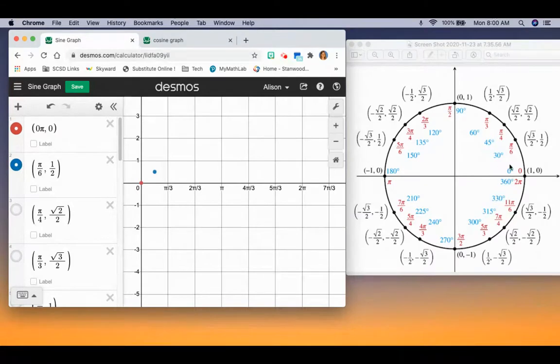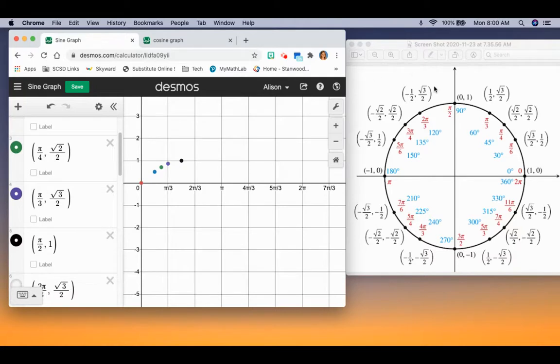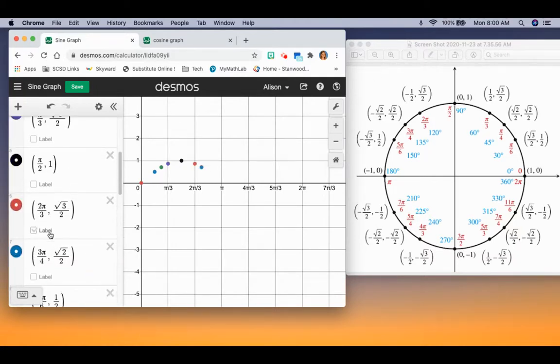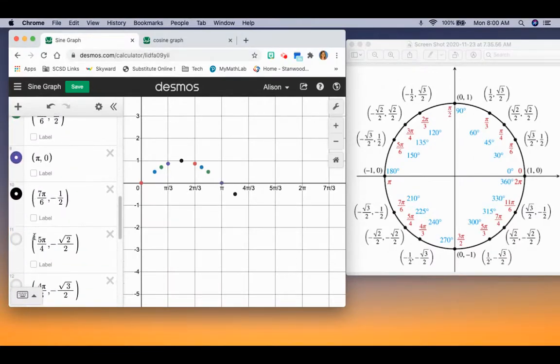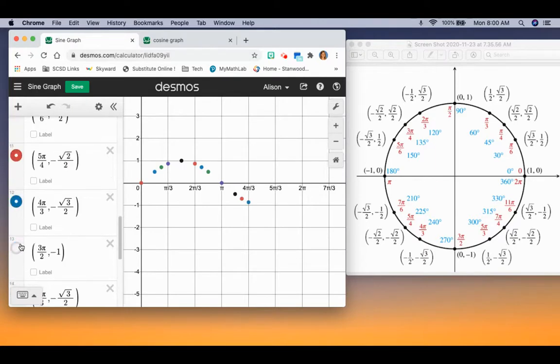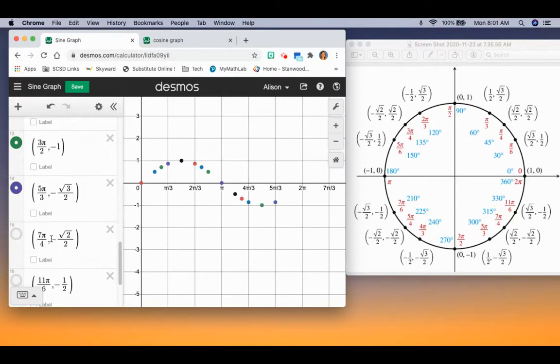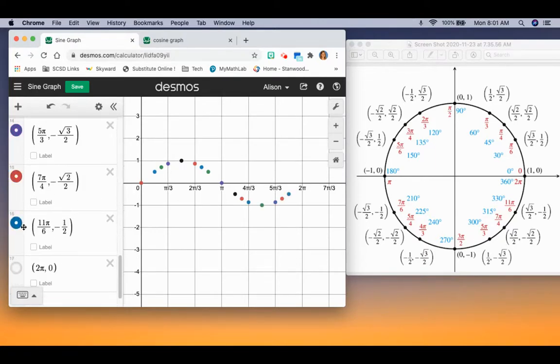At π/6, our y-value is 1/2. At π/4, our y-value is √2/2. At π/3, our y-value is √3/2. And at π/2, our y-value is 1. I'm going to keep clicking these dots all the way around the unit circle. These are all of our points all the way around back until we get to 2π.